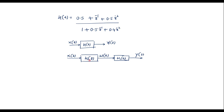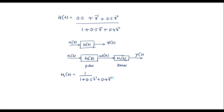In Direct Form 2 structure, H1(Z) corresponds to poles and H2(Z) corresponds to zeros. Zeros are the numerator part of H(Z) and poles are the denominator. Therefore H1(Z), representing the poles, is 1 divided by (1 plus 0.5 Z inverse plus 0.4 Z power minus 2).